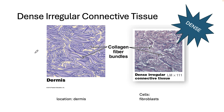Dense irregular connective tissue is found in the dermis. Because the collagen and elastic fibers run in different directions, it displays strength in many different directions. It's also in the dense category, as you can see there isn't a lot of space around the cells and fibers. The cells in dense irregular connective tissue are also called fibroblasts.